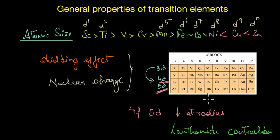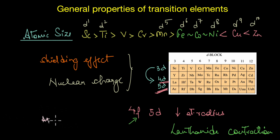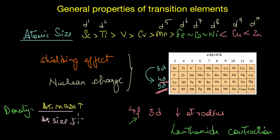As a result of lanthanide contraction, the 4d and 5d series have similar radii and also exhibit similar physical and chemical properties. The lanthanide contraction is caused by the imperfect shielding of the 4f electrons. As we go down the group, the atomic size more or less remains the same but the atomic mass increases. So the decrease in atomic size coupled with increasing atomic mass means that mass divided by volume — that is, density — increases for the elements of the 5d series.